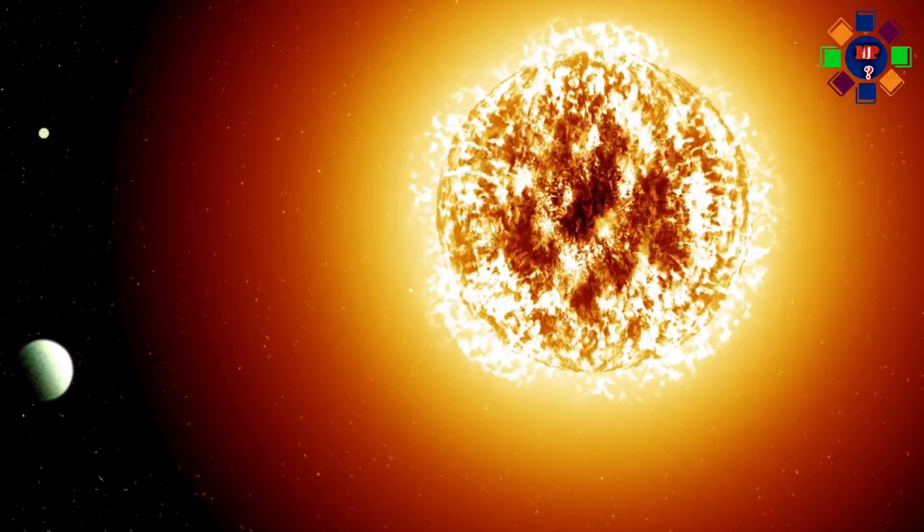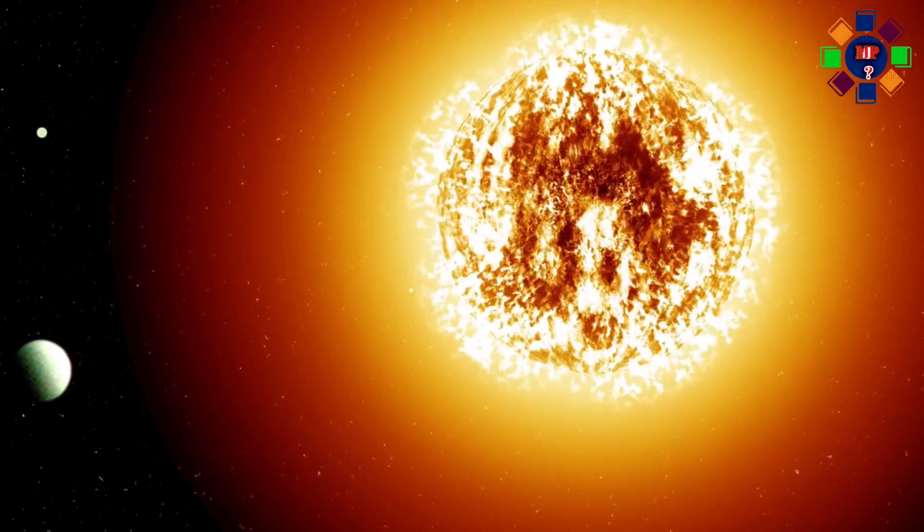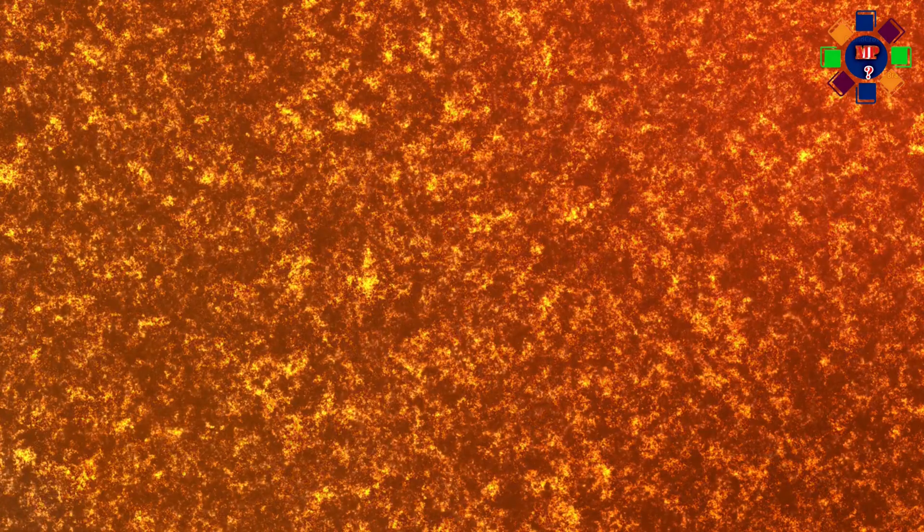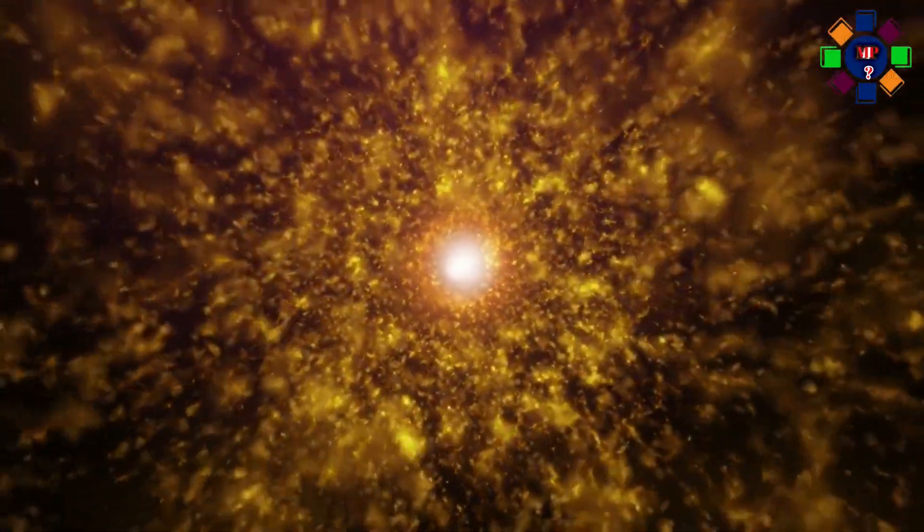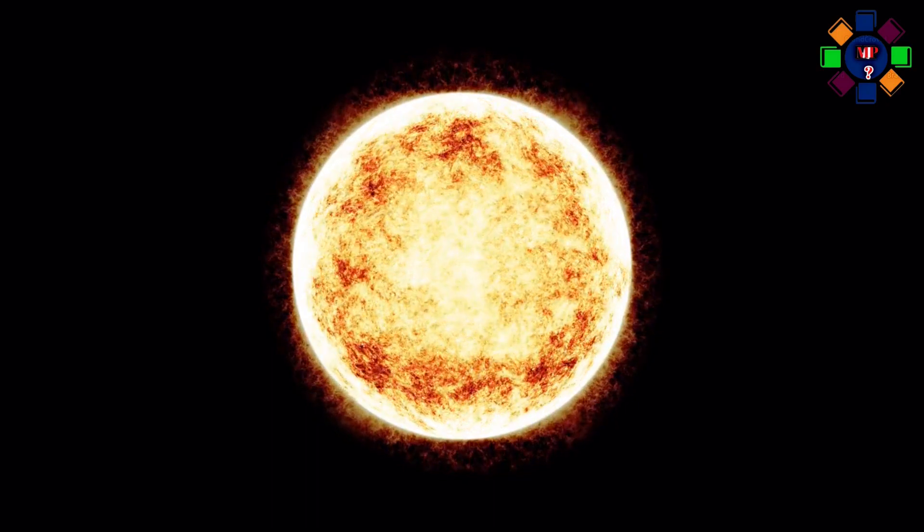The main component of the sun is hydrogen gas. About 73% of the sun is filled with hydrogen gas and 25% is filled with helium. The remaining two percent contains oxygen, neon, carbon, and iron.